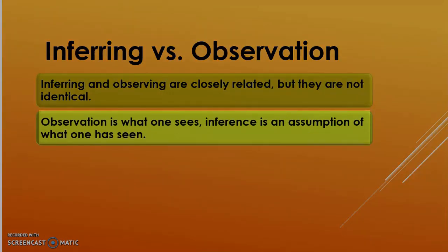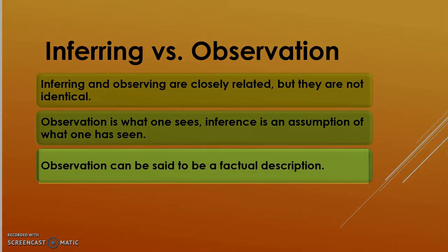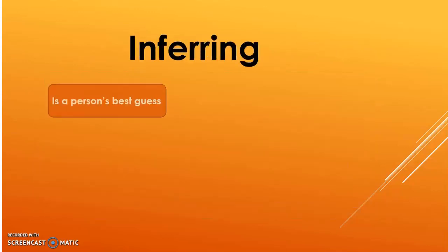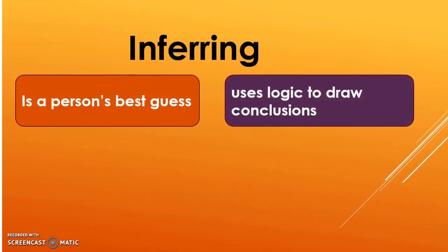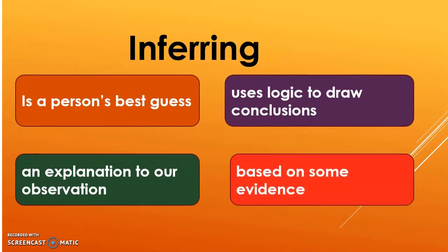Observation is basically what we see, but inference is an assumption about what we have seen. What we are seeing are the facts — those are observations. When we draw inferences on the basis of those facts, we can say that observation is a factual description, but inference is an explanation of the collected data. So inference is not only a guess — a person uses logic to draw conclusions.